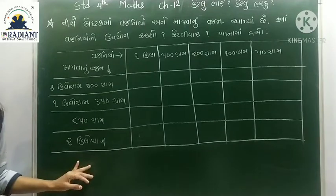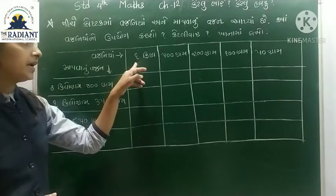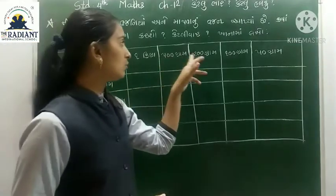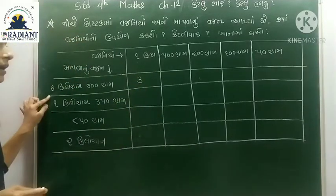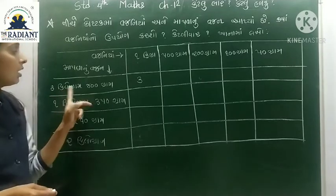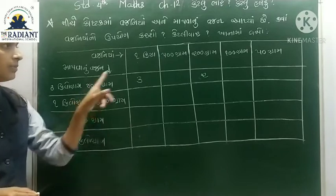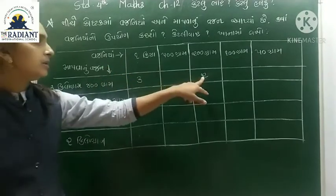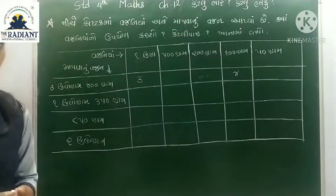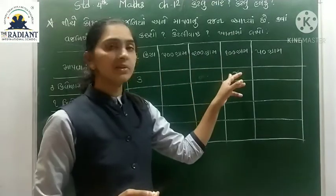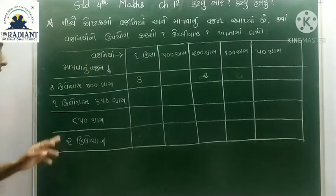પહેલો આંક છે 3 કિલોગ્રામ 400 ગ્રામ. 3 કિલોગ્રામ આપણી પાસે 1 કિલો 1 કિલો 1 કિલો ત્રણ 1 kg ના વજના. 200 ગ્રામ ના 2 વજના — 200 + 200 = 400. 3 કિલોગ્રામ + 400 ગ્રામ. 100 ગ્રામ ના 4 વજના પણ લઈ શકાય, 400 ગ્રામ ઉપર ઉપર ઠીક. 200 ગ્રામ ના 2 વજના + 1 kg ના 3 વજના.